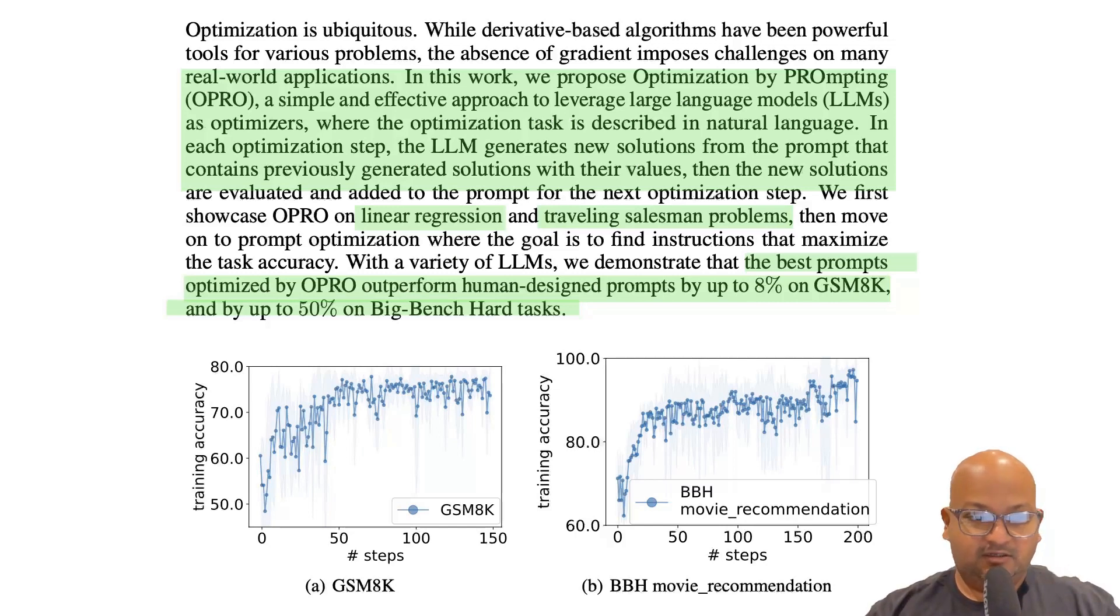In this paper, they look at three different examples: linear regression, the traveling salesman problem, and then I think the most interesting example is to optimize prompts for other tasks that you want an LLM to do.